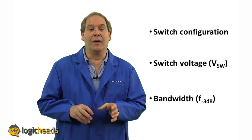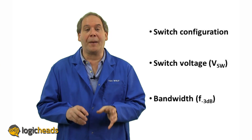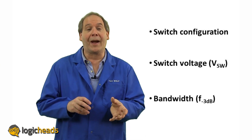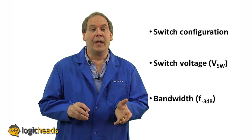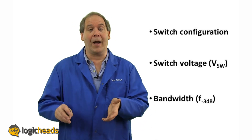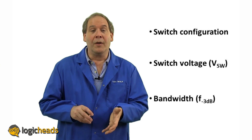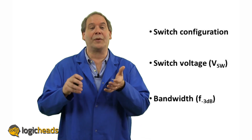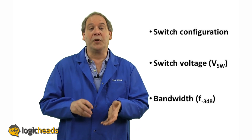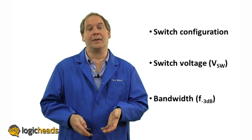Bandwidth, or the frequency of the 3 dB point: the higher the frequency signal you try to pass through the analog switch, the more the switch pushes back or reacts due to its inherent capacitance. At some frequency, the signal is reduced or attenuated by minus 3 dB from its DC level. For an audio signal, this means the signal now sounds only half as loud as it originally was. If you're switching a data signal, the bandwidth determines the maximum data rate it can support.